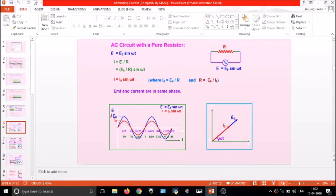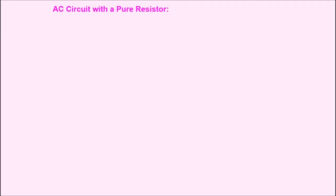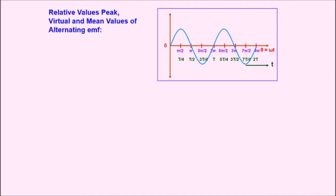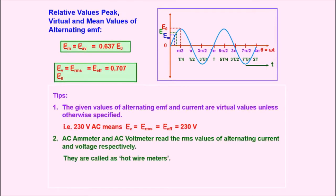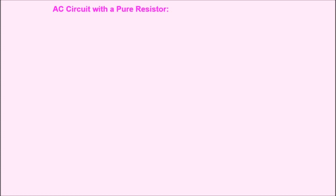Hello learners, welcome back to our next video on electromagnetic induction and alternating current. In this video we are going to study alternating current circuits. If you had gone through my previous videos, you learned about how alternating current and EMF work, and how to get their values — the RMS value, peak value, and mean value. Now we are moving ahead to our next topic: alternating current circuits. We will study three types of circuits: resistor, capacitor, and inductor circuits, and combinations of them.